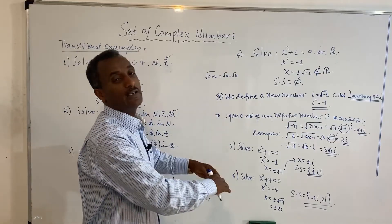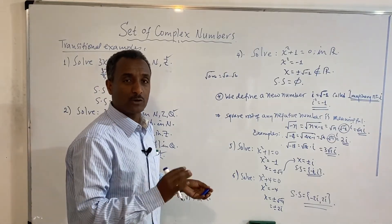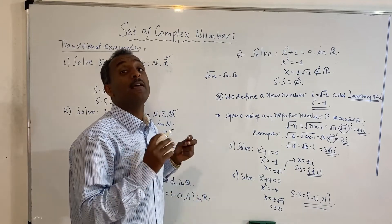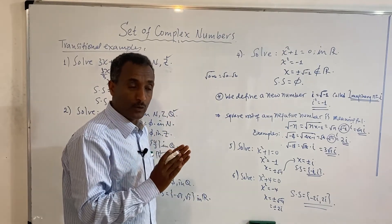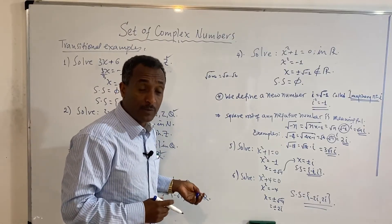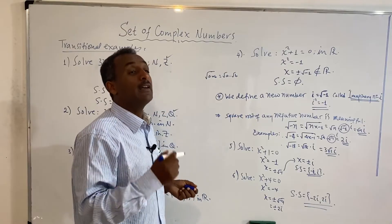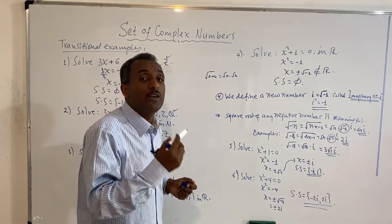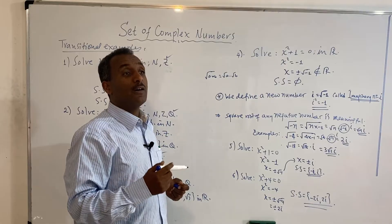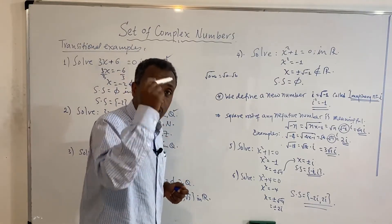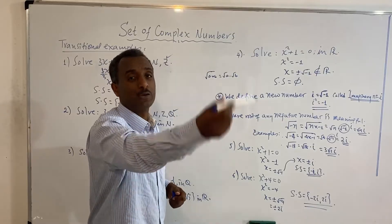From now on, every quadratic equation can be solved. Previously we said there was no real solution, but with complex numbers there is always a solution. For equations that have no real solution, they have complex or imaginary solutions. This is why complex numbers are important — they complete the number system.